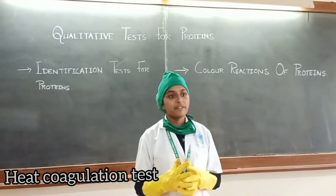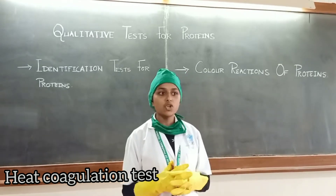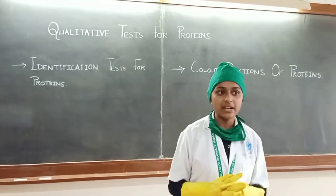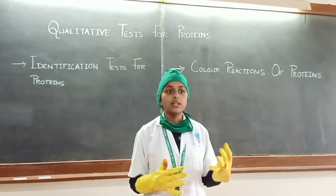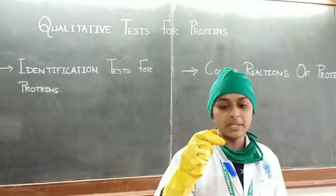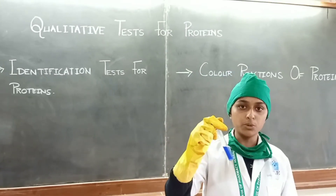Coagulation test: 5 ml of sample plus 3 drops of chlorophenol red — the color changes to purple. By performing it, violet color appears, indicating the presence of albumin.